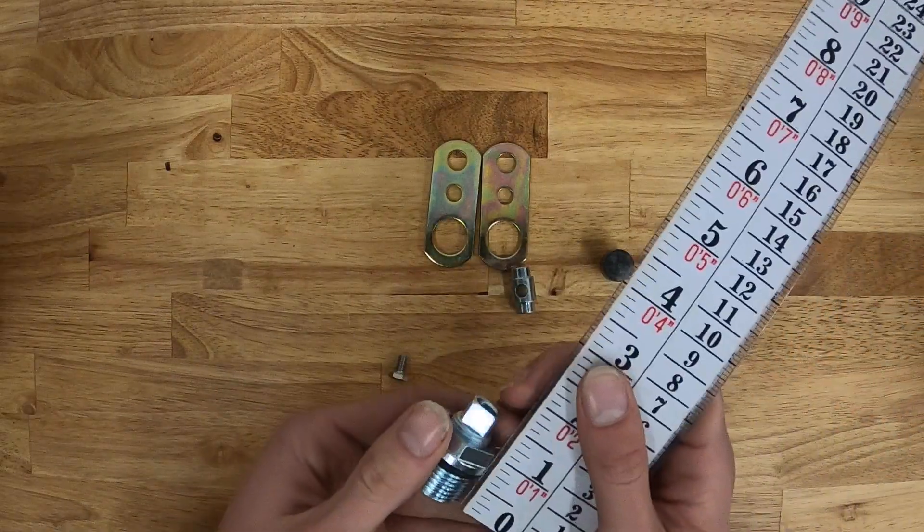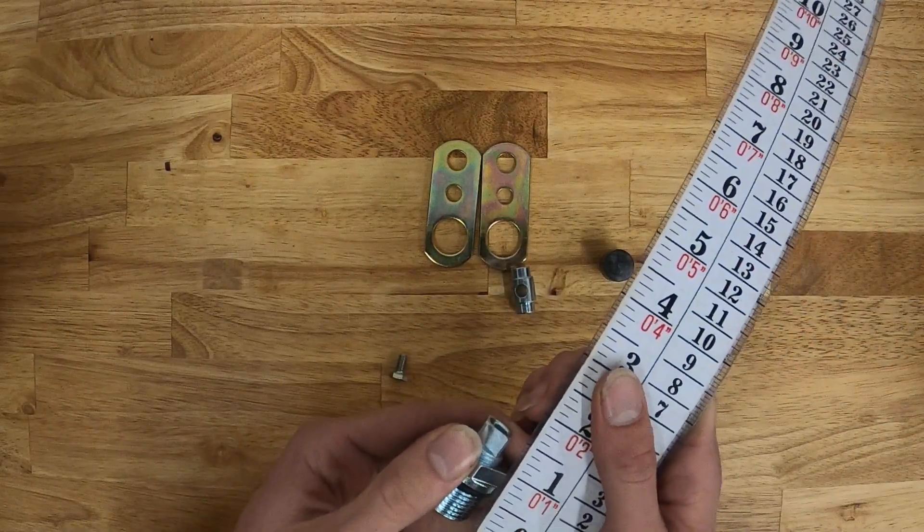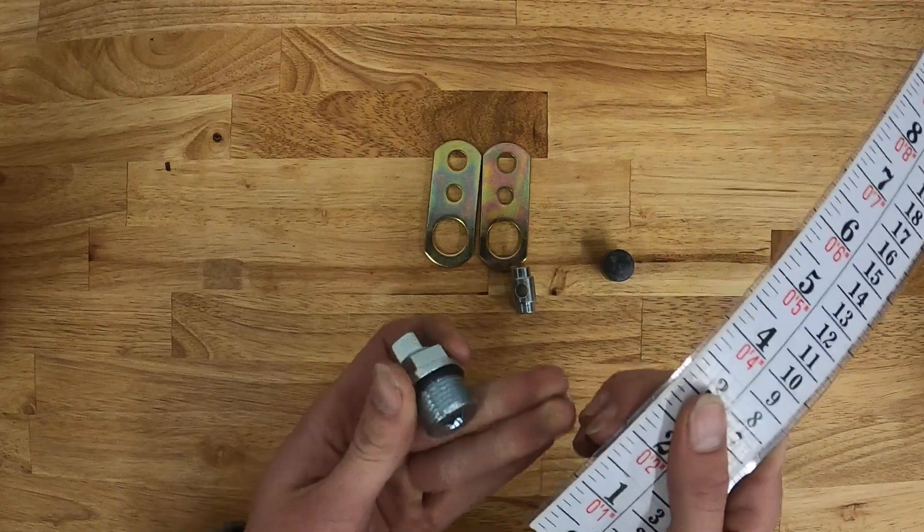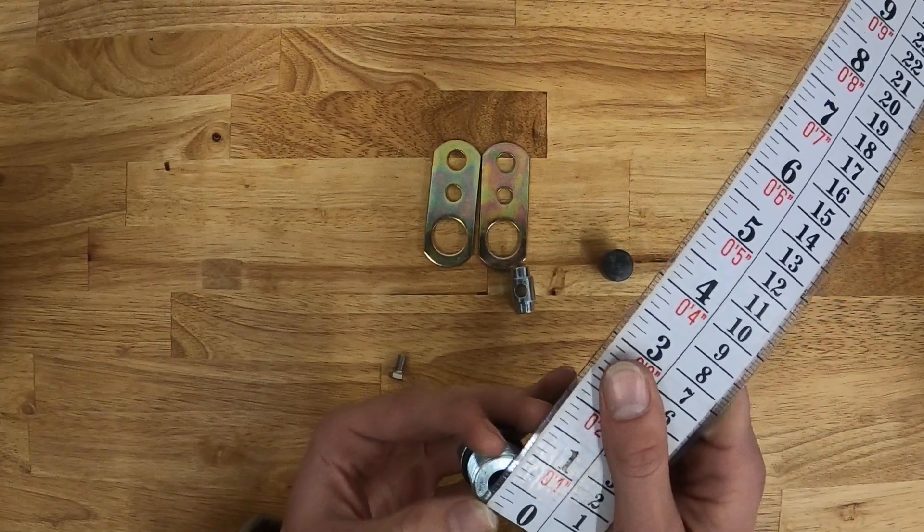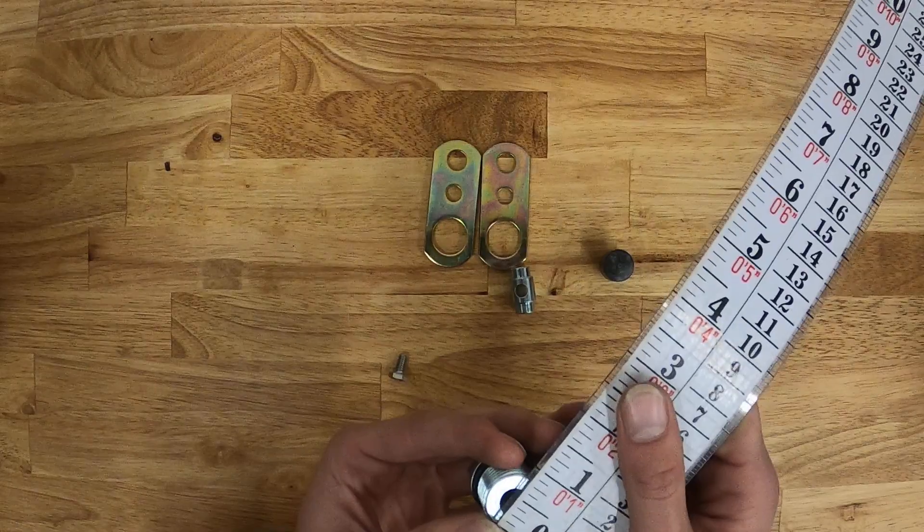And then the packing nut, you get a total length. That'll measure right at an inch and a half, with an outer diameter of right about three quarters of an inch.